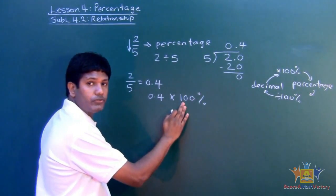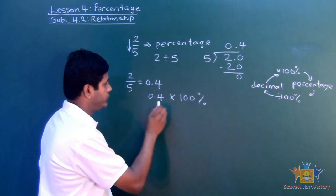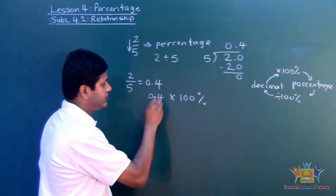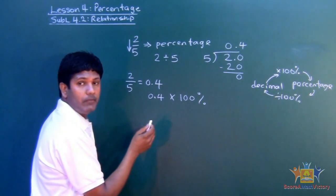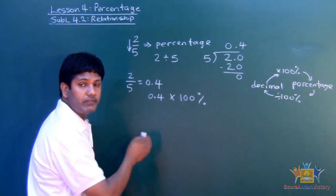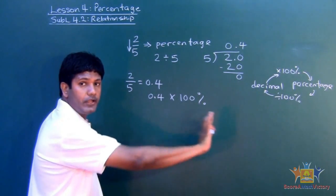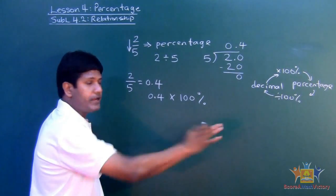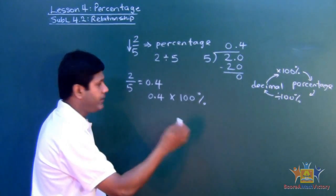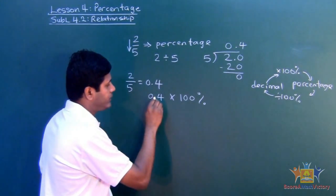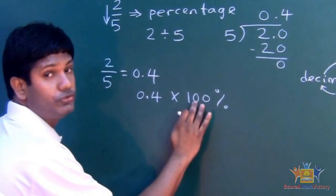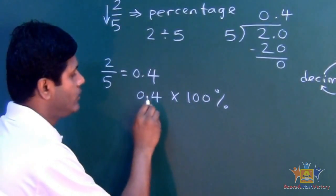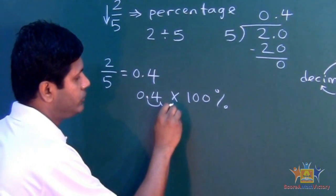100 is how many zeros? Two zeros. Grab the decimal and move it to which direction when you multiply? To the right, because the number gets bigger. How many times? Twice. Why two? Two zeros. One, two.